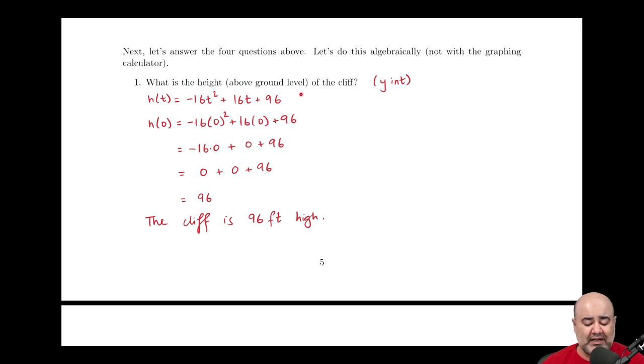So if we're asked to find the height above the ground level of the cliff, so how high is she jumping off from, this is really just the y-intercept. So if we have the height function, if we plug in 0 for the input variable, so if we find h of 0, we would get negative 16 times 0 squared plus 16 times 0 plus 96.